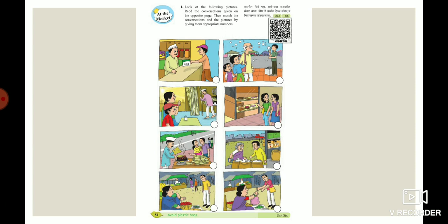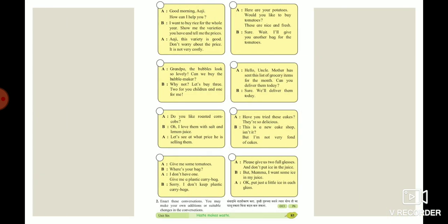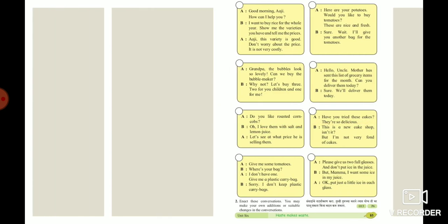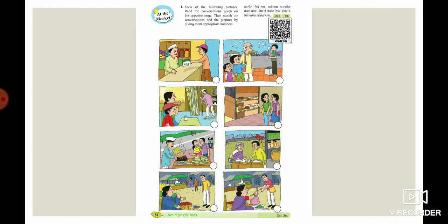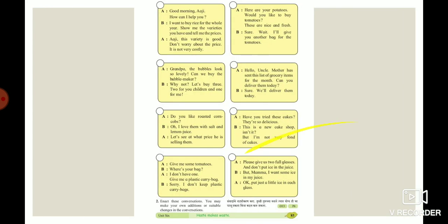Look at the following pictures. Read the conversations given on the opposite page. Then match the conversation and the pictures by giving them the appropriate number. Means here are the pictures — look at them very carefully, and then read the conversations and find out which conversation is suitable for each picture. Do you understand? Let's try some examples.